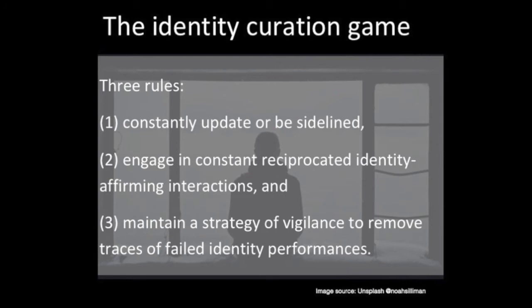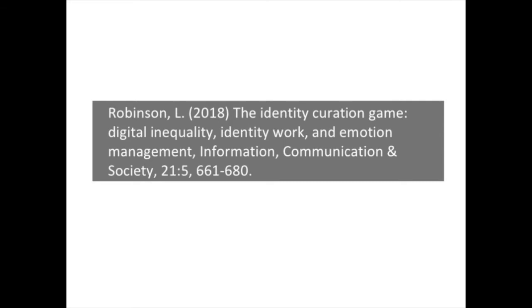Number one: constantly update or be sidelined. Two: engage in constant reciprocated identity-affirming interactions. And three: maintain a strategy of vigilance to remove traces of failed identity performances. This should make us think about the ways in which unequal access to digital resources can contribute to exclusion — what she calls digital social invisibility.